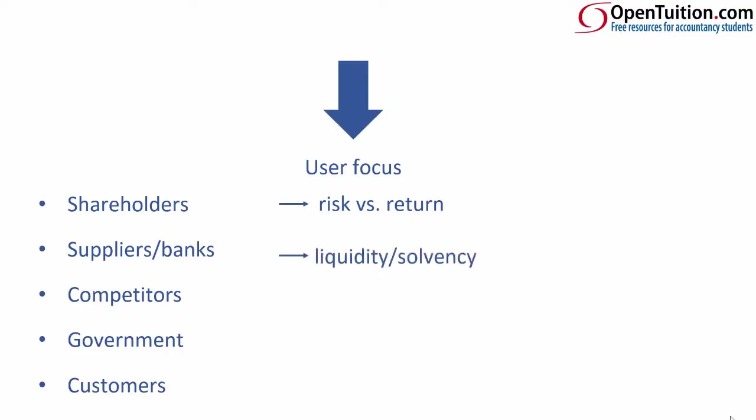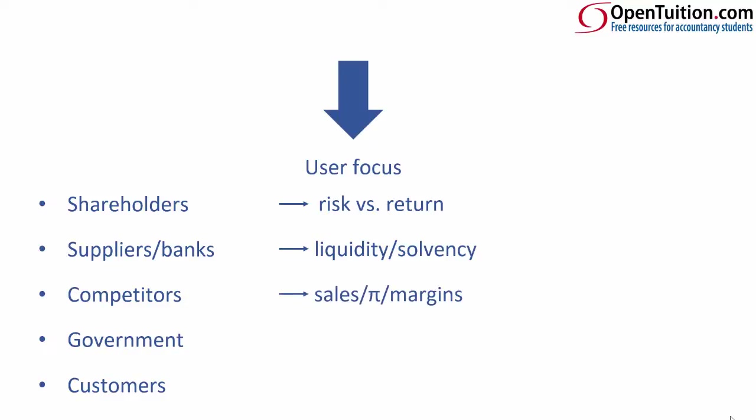Suppliers and banks want their money back, so we're thinking along the lines of liquidity and solvency. Liquidity is very much looking at suppliers getting their money back in the short term. Solvency is thinking about whether the business will be around for the long term, particularly from a bank's perspective, to pay off the loan. Competitors want to look at your performance compared to theirs — they want to look at the sales and profits. But because different companies have different levels of profits, we would look at the margins each business makes. So if you're comparing EasyJet and Ryanair, comparing gross margins and operating margins gives you a better like-for-like picture.